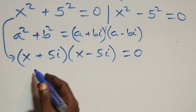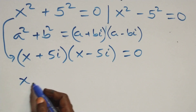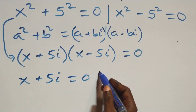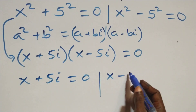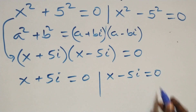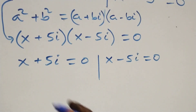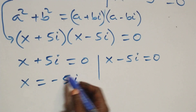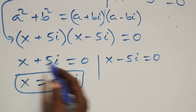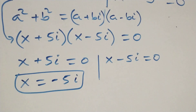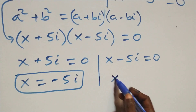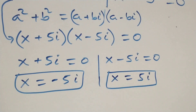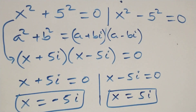At this point, we have 2 possible cases: (x plus 5i) equals 0, or (x minus 5i) equals 0. Solving on this side, we have x equals to minus 5i, which is a complex solution. Also, we have x equals to 5i, which is also a complex solution.